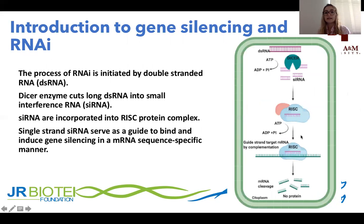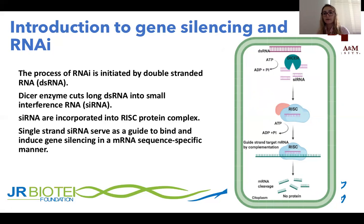This is the intracellular process of RNAi. RNAi is always initiated by a double-strand RNA molecule that is recognized by an enzyme called DICER. DICER is activated in the presence of ATP and cleaves this long molecule into short-interference RNA double-strand molecules. These double-strand siRNA molecules are then incorporated into a protein complex called RISC, which is activated in the presence of ATP and unwinds the double-strand RNA into single-strand RNA molecules.